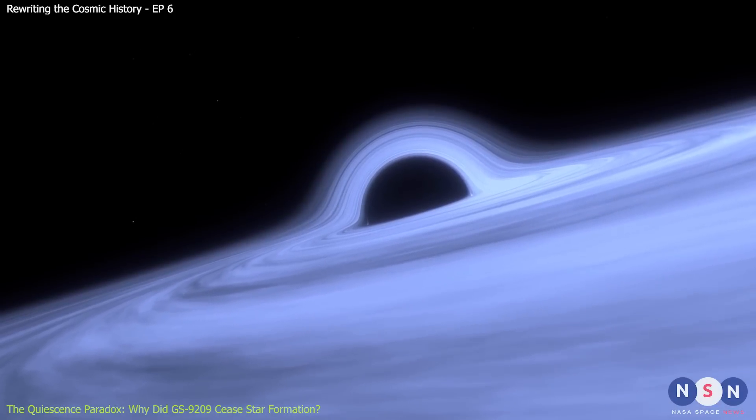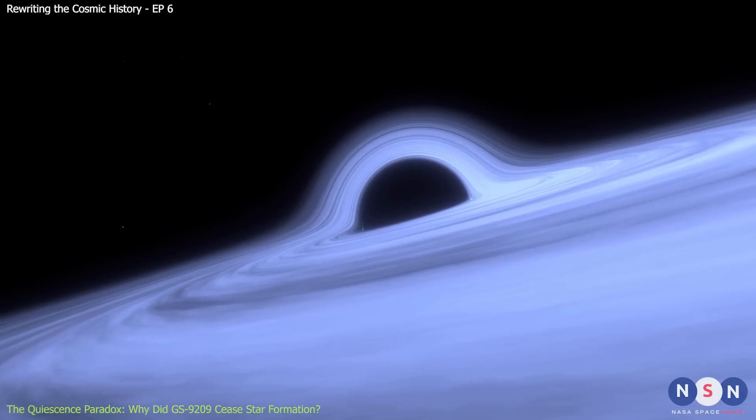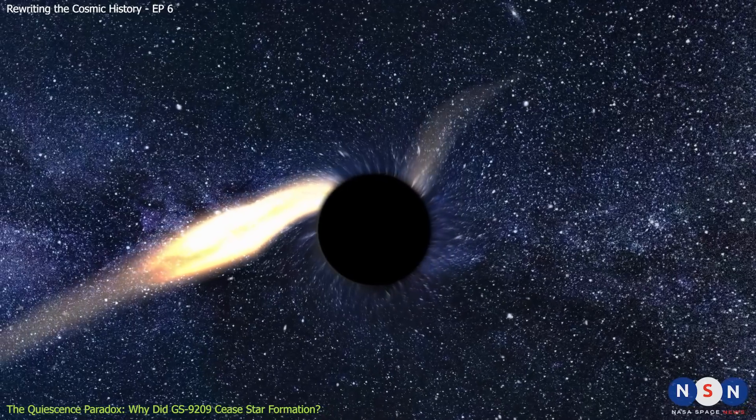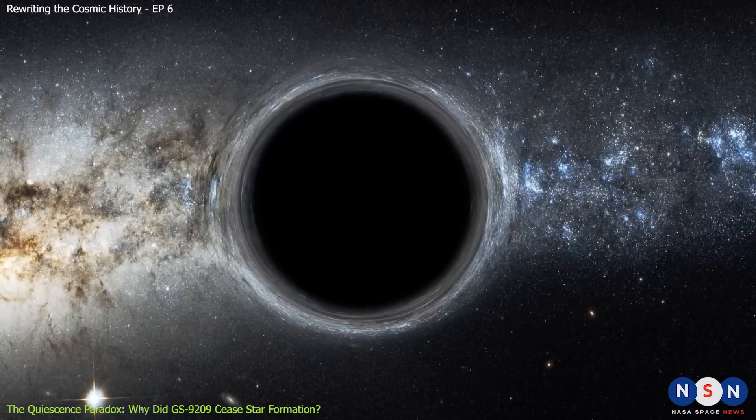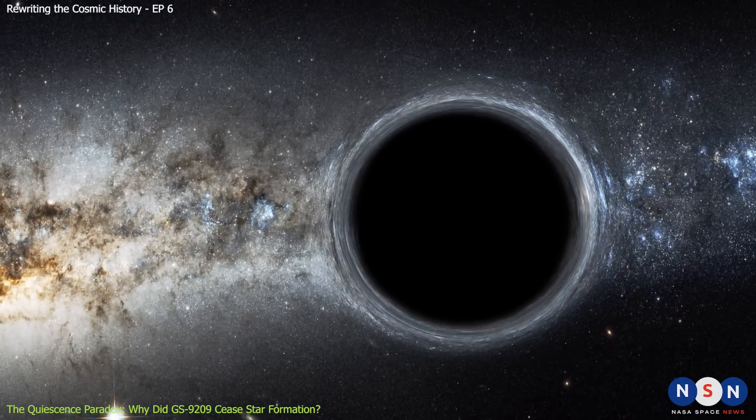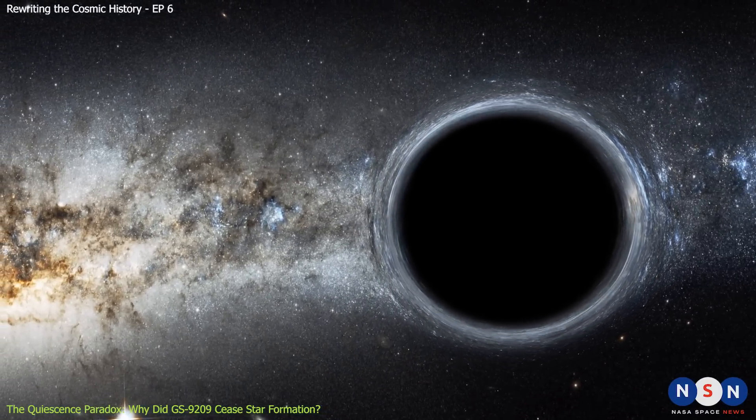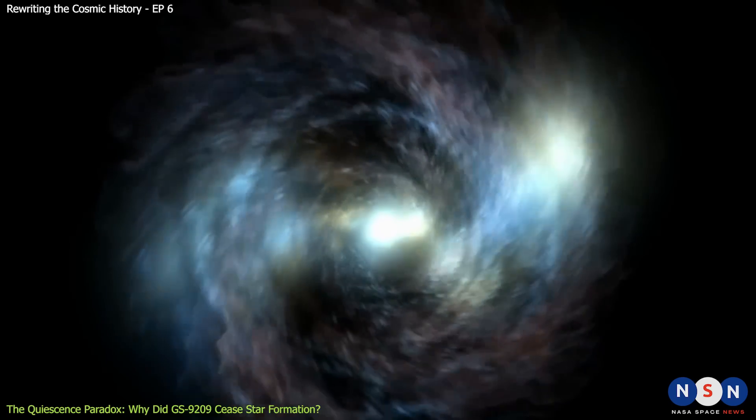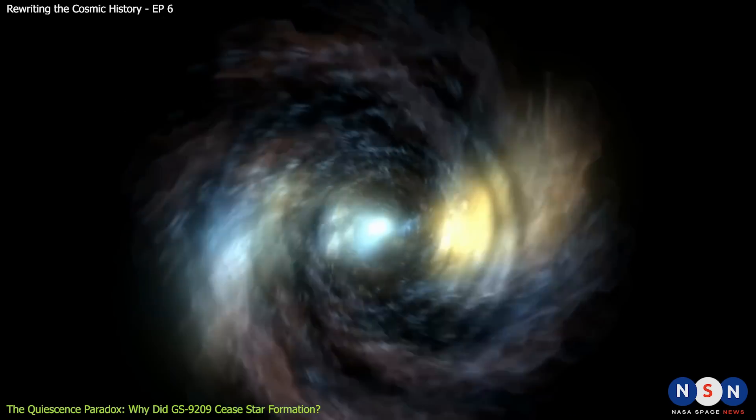Well, one possible clue comes from its supermassive black hole at its center, just like most galaxies do. But this black hole is not like any other black hole. It is five times larger than astronomers might anticipate in a galaxy with this number of stars, which is super weird. The study suggests that this black hole may have something to do with why GS 9209 stopped forming stars.